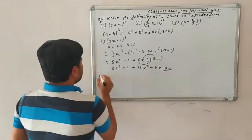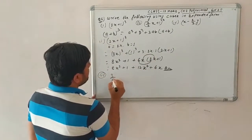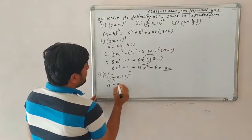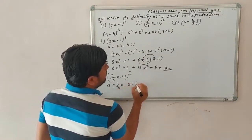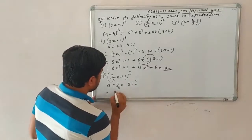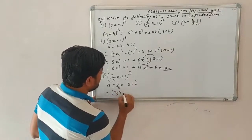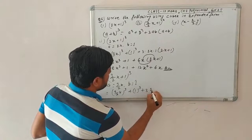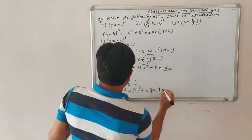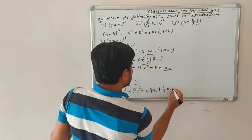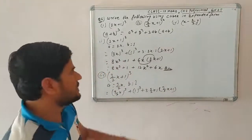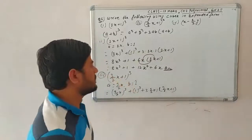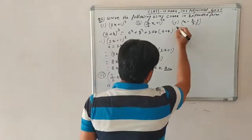The next question, number three, is (3/2·x + 1)³. Here a = 3/2·x and b = 1. We apply the same identity: (3/2·x)³ + 1³ + 3·(3/2·x)·(1)·(3/2·x + 1), using exactly the same process as before.